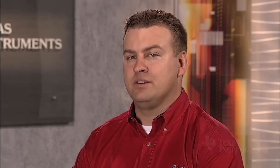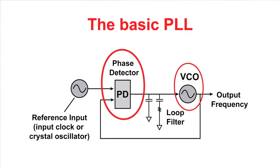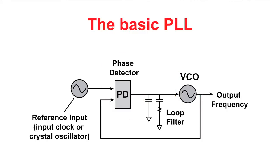In simple terms, a PLL is a feedback system that generates a signal that has a fixed relation to the phase of an incoming reference signal. The simplest of PLLs consists of a phase detector and a voltage-controlled oscillator, or VCO. The purpose of a phase detector is to perform a comparative evaluation of the signals applied to its two inputs. A reference frequency is fed into one input, while the output of the VCO is fed back into the second input of the phase detector. This is commonly known as the feedback loop.